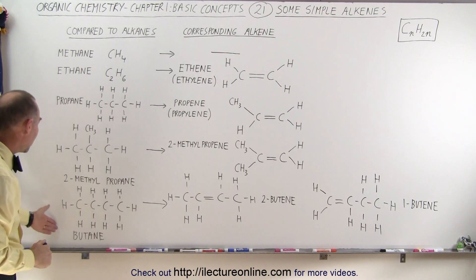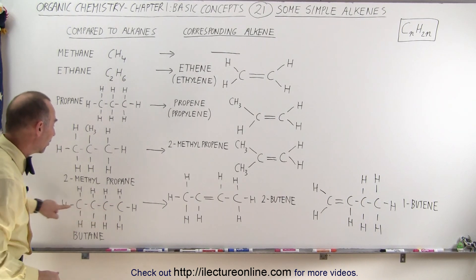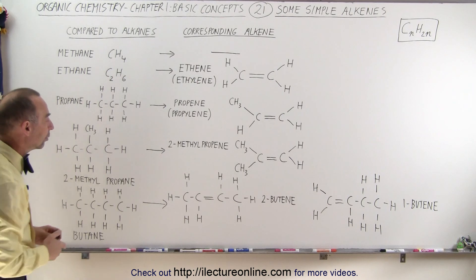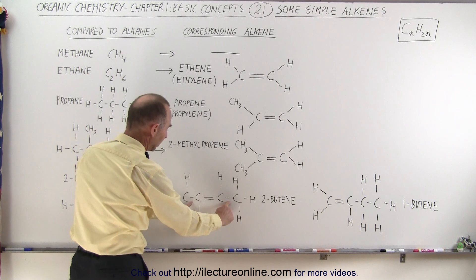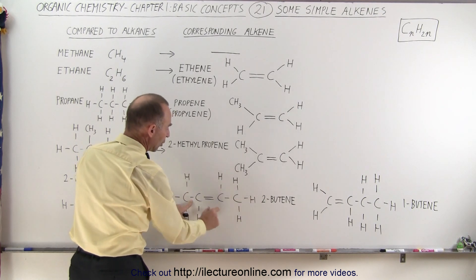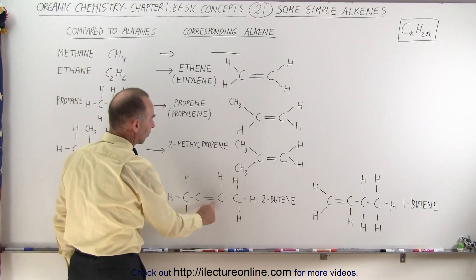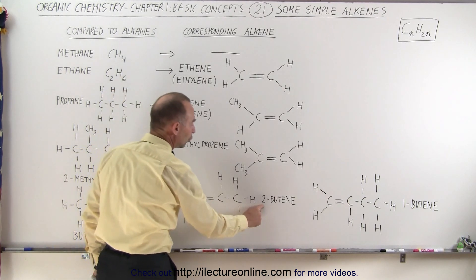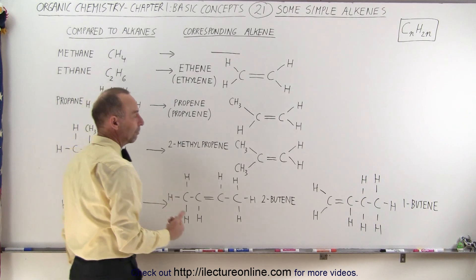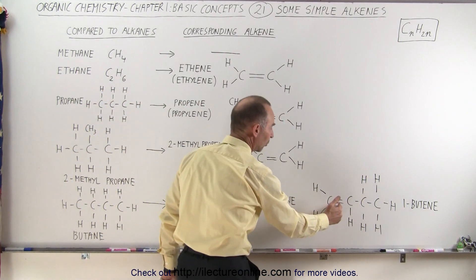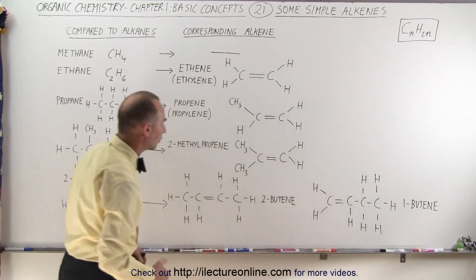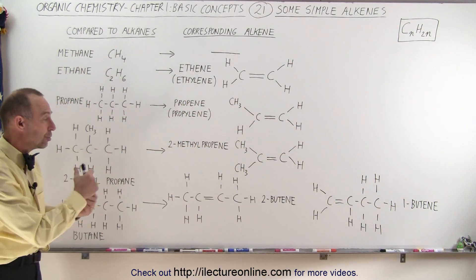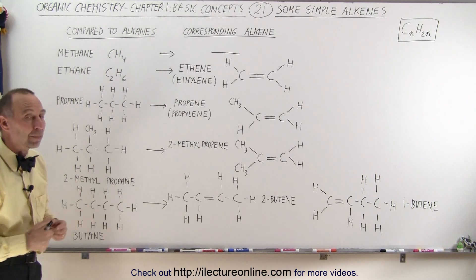Finally, another example is the butane molecule. Notice we have four carbons, all single bonds. When we turn it into an alkene there will be at least one double bond. That double bond could be placed on the first carbon — giving us 1-butene — or placed on the second carbon — giving us 2-butene. So depending on where we place the double bond, you end up with a different molecule with different properties.